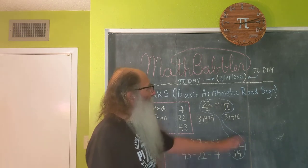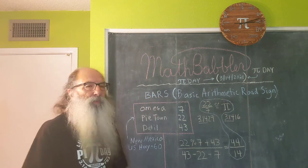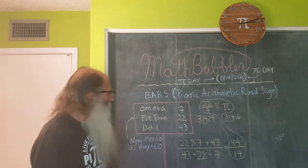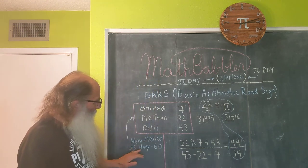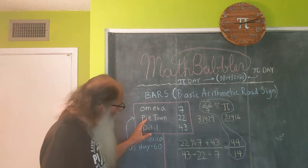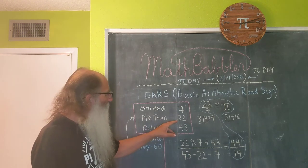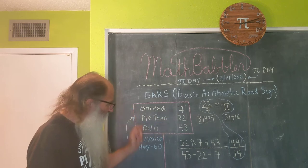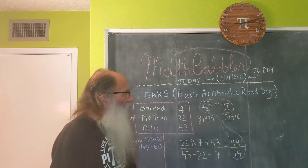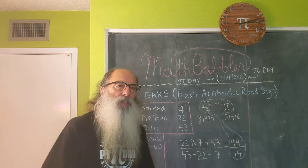We're going to celebrate Pi Day this year by using a basic arithmetic road sign, affectionately known as a BARS. I got this road sign in New Mexico on US Highway 60. We were heading east to Pi Town, and you can see that Pi Town is in this road sign.